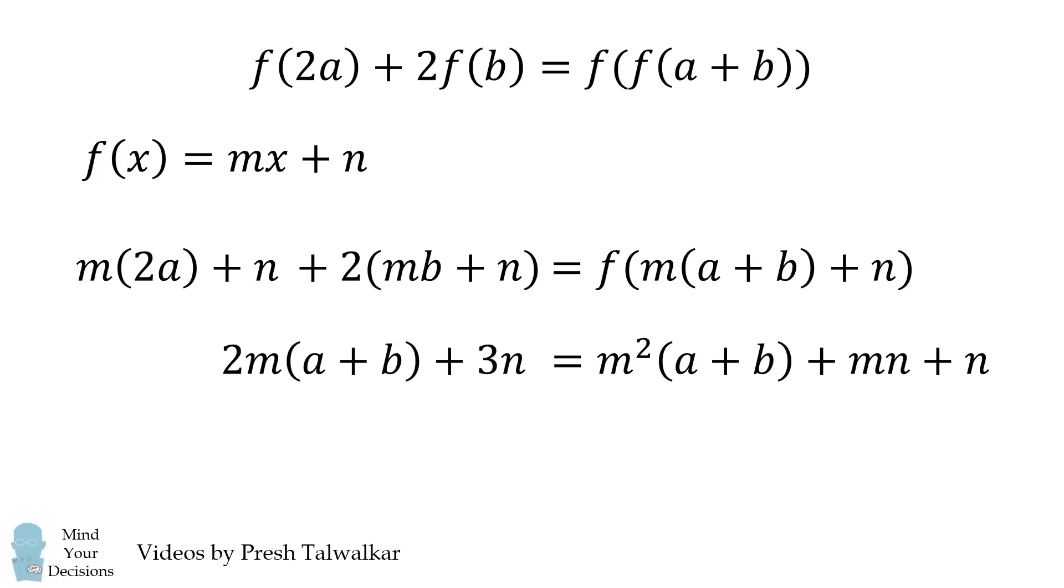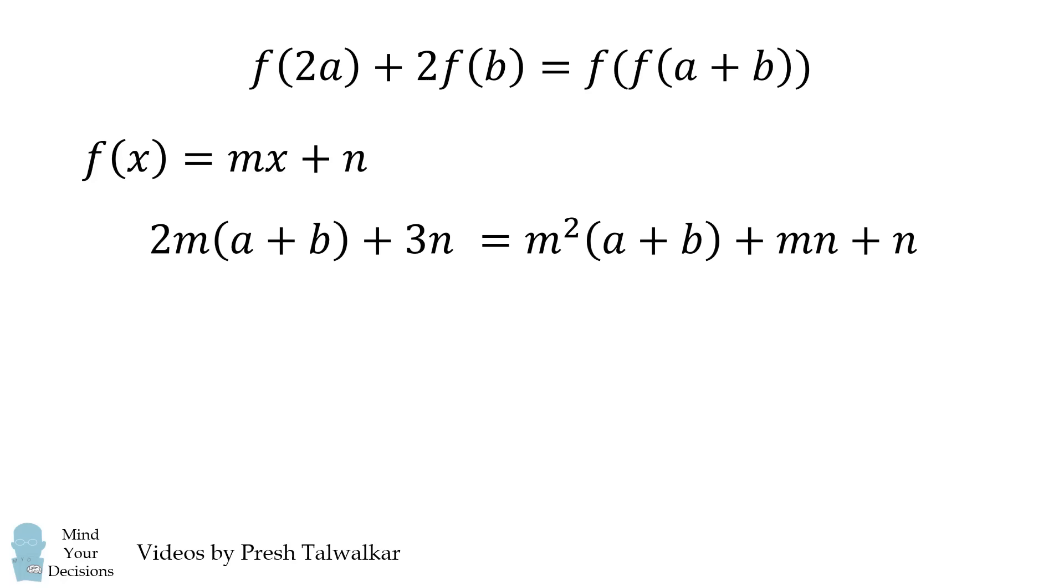We simplify both sides and now how are we going to figure out M and N? We're going to match coefficients of like terms. So here we have the term A plus B on the left and A plus B on the right. And this has to be true for all integers A and B. The only way this is true is if we match the coefficients 2M and M squared. Now we also match the constant terms. So we have 3N is equal to M times N plus N.